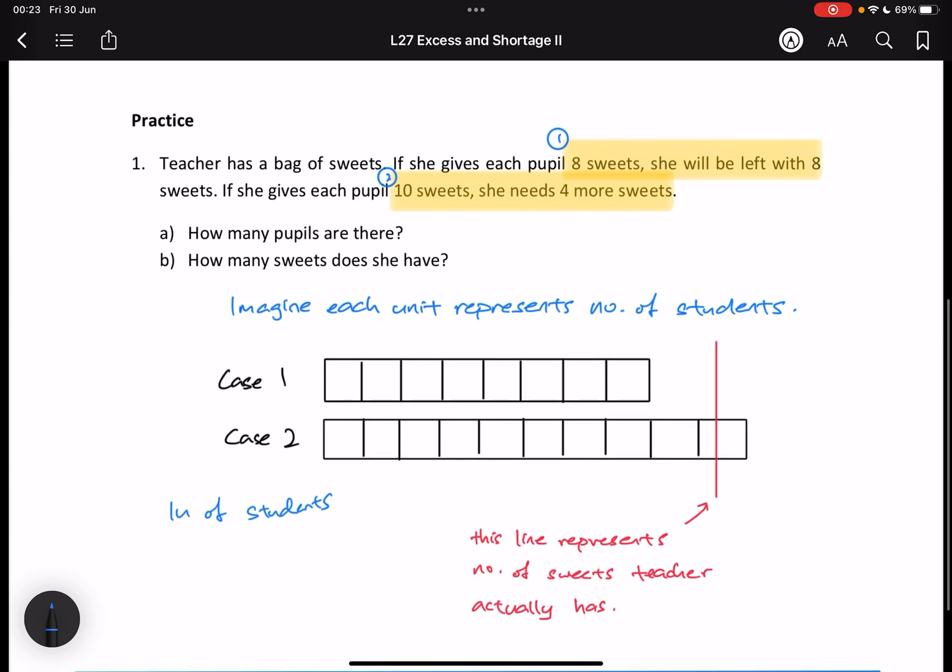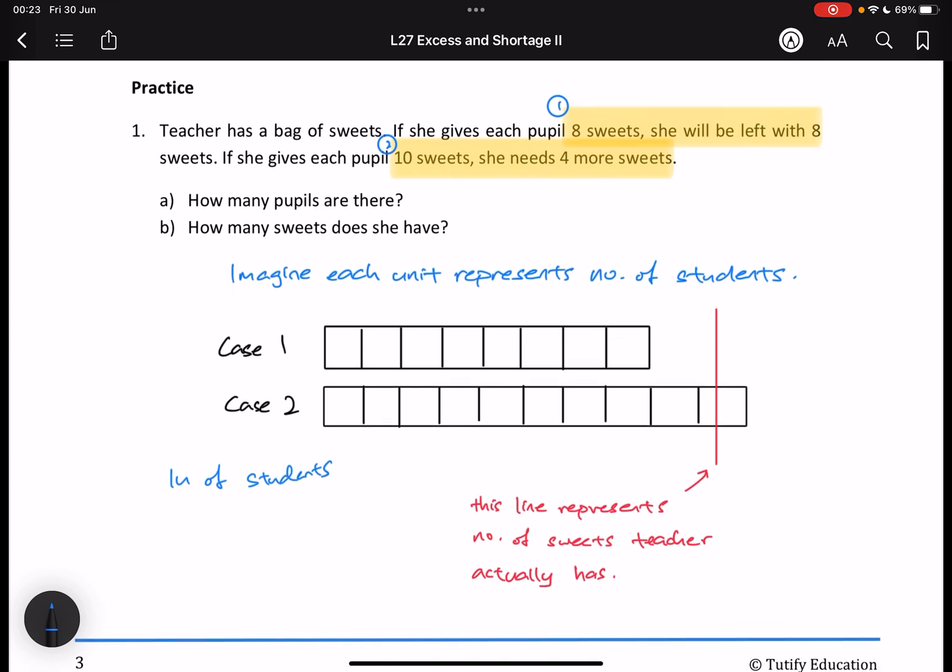So, there's one unit of students in the class. Now, if I give each person two sweets, how many sweets do I need? Two times the number of students. I need two units of sweets.